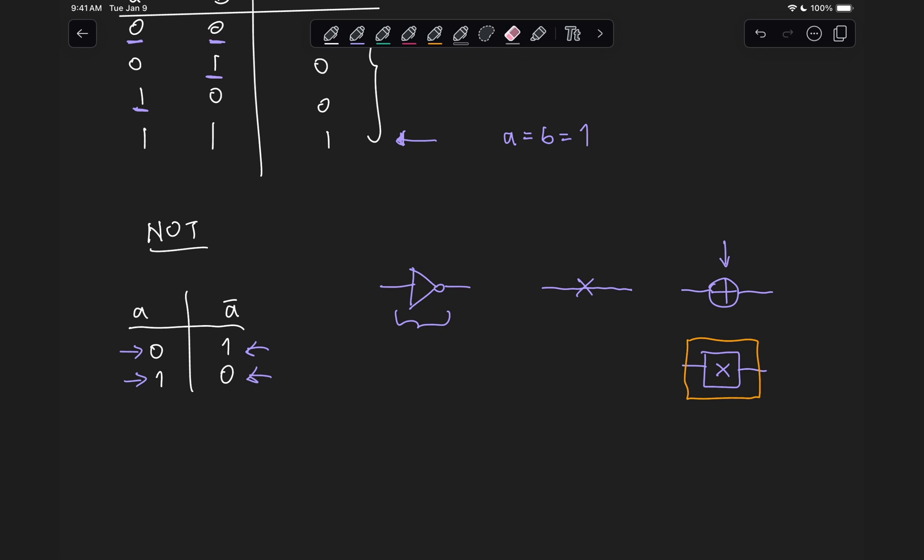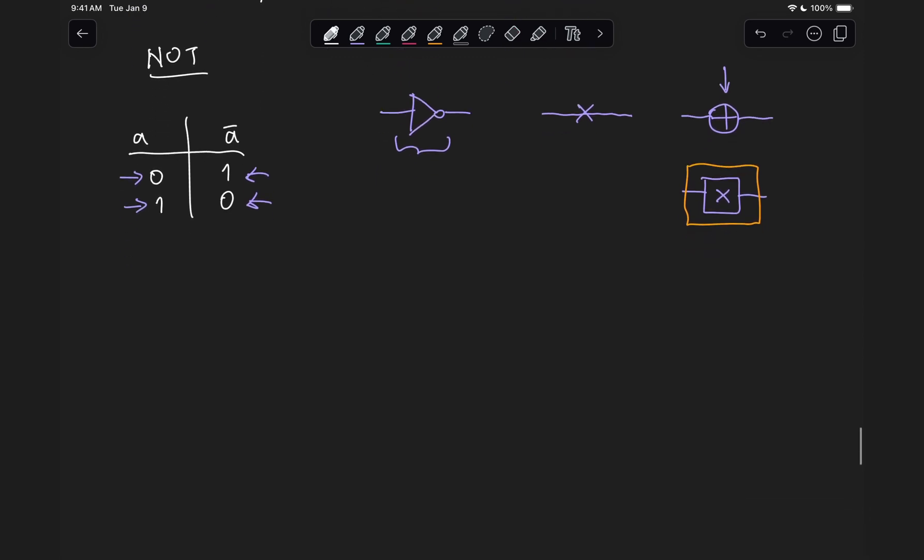So the NOT gate was rather trivial. Let's look at the XOR gate. The truth table for the XOR is given by the following: we get a zero whenever both inputs are equal, and we get a one whenever they're different. Now we can see from this that the XOR is definitely not reversible the way it stands. If we get a zero at the output, our inputs could be either zero zero or one one. And similarly, if we get a one at the output, it could be zero or one and one or zero.